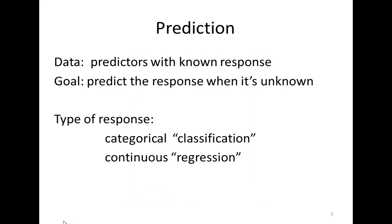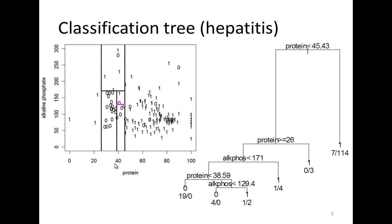Random forests are used for prediction. The idea is that you've got a bunch of predictors and a known response, and that gives you your training data. What you want to do is predict the response when you've got measurements on the predictors but you don't know what the response is. There are two main types of prediction: the first is categorical, which we call classification, and the second is where the response is continuous, which we call regression. Random forests can be used for both, and it's based on trees.